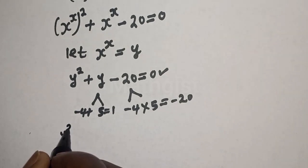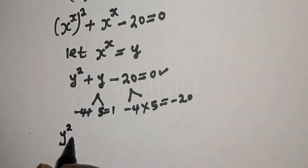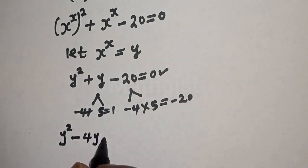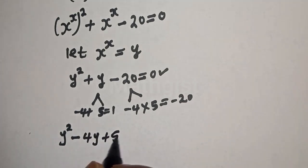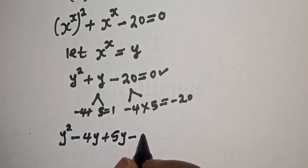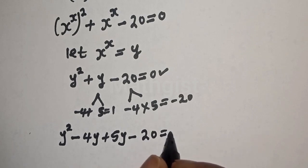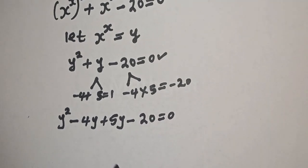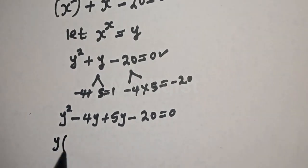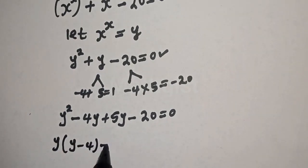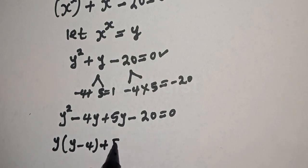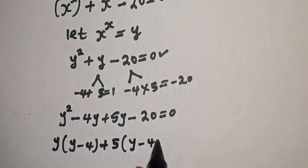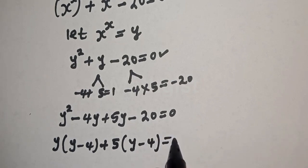Substituting, we get y squared minus 4y plus 5y minus 20 is equal to zero. y is common here: y bracket y minus 4, plus 5 bracket y minus 4 is equal to zero.